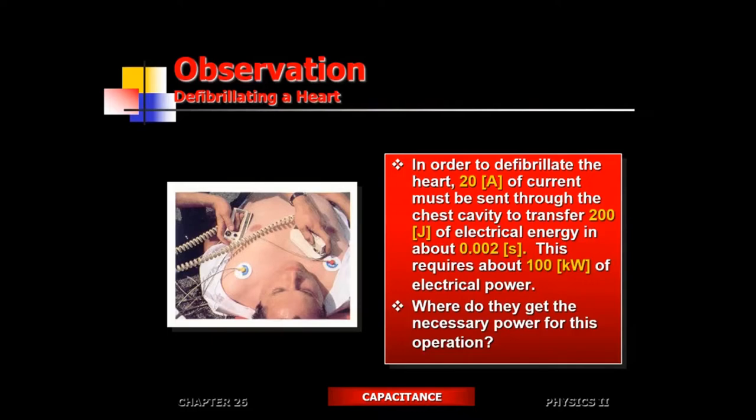So how much current is required to stop the heart? It takes about an amp of current — that's what 'A' or amperes of current represents. Except here's what happens: we pump about 20 amps of current into the chest cavity. So why 20 amps of current? That seems excessive.